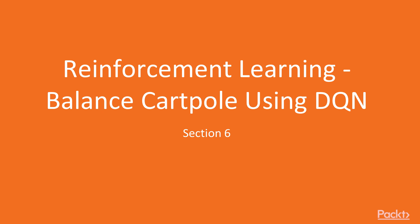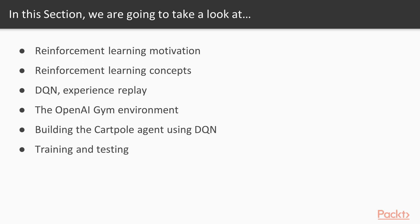Welcome to the last section of this course. This section is all about reinforcement learning, in which we are going to train an agent to balance a cart-pole using deep Q-networks. First we are going to see the applications of reinforcement learning, then we are going to learn about the key concepts in reinforcement learning, followed by DQN or deep Q-networks and experience replay. These are the techniques we will use to achieve the goal of balancing a cart-pole.